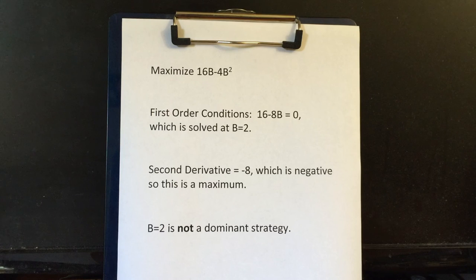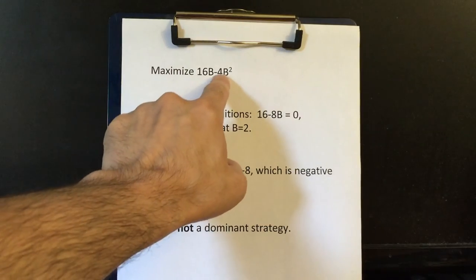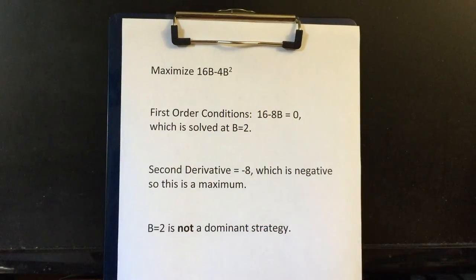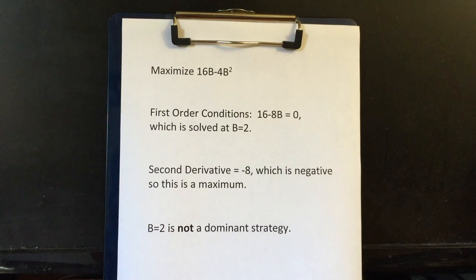Now B equals two is not a dominant strategy. That's because we got B equals two only after deciding that A would be four. I haven't proved this, but if A were not four, we would get a different answer. So in this game, player two does not have a dominant strategy, although player one does. Thank you.